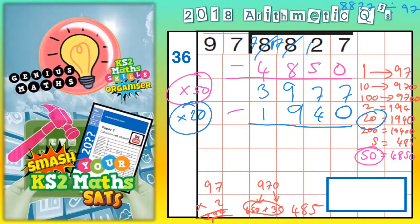7 subtract 0 is 7. 7 subtract 4 is 3. 9 subtract 9 is 0. 3 subtract 1 is 2.